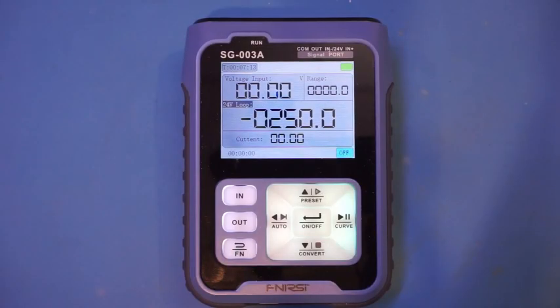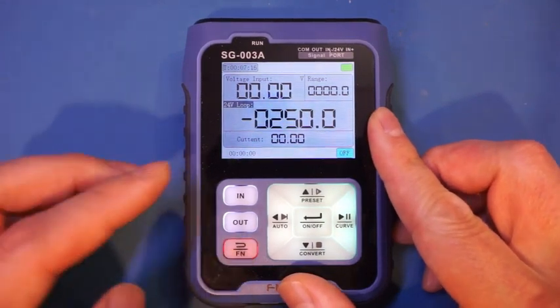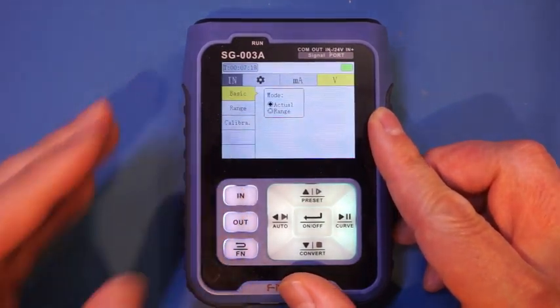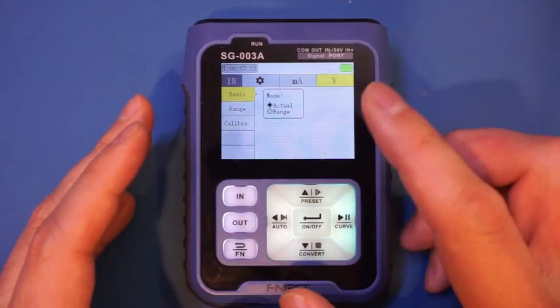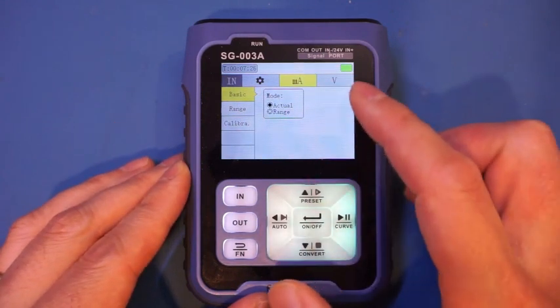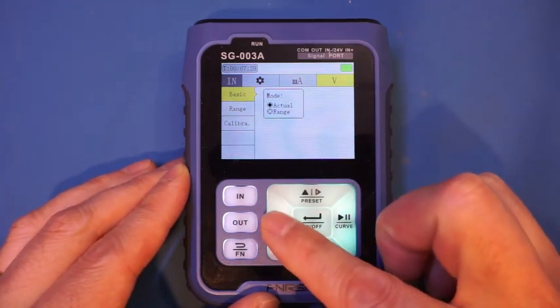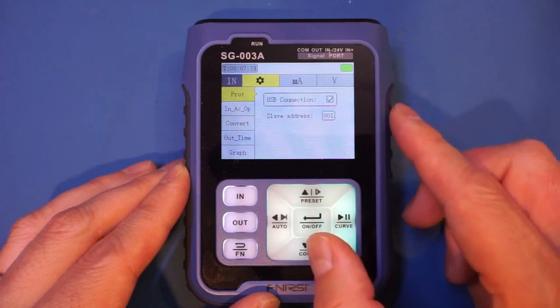Now let's take a look at some other functionalities. Let's first take a look at the input here. Remember this device can input voltages and currents and also output voltage and current. On the input manual, you can see that we have the option for current sinking and input voltage.